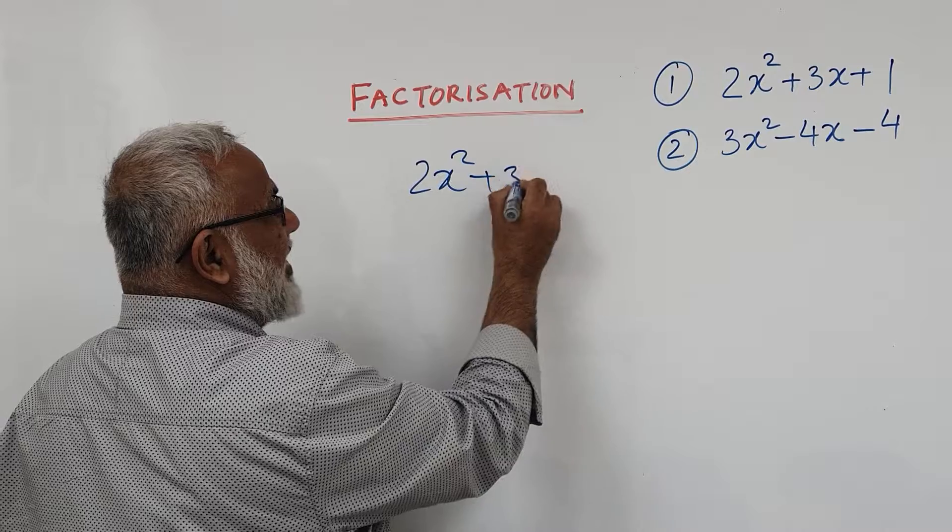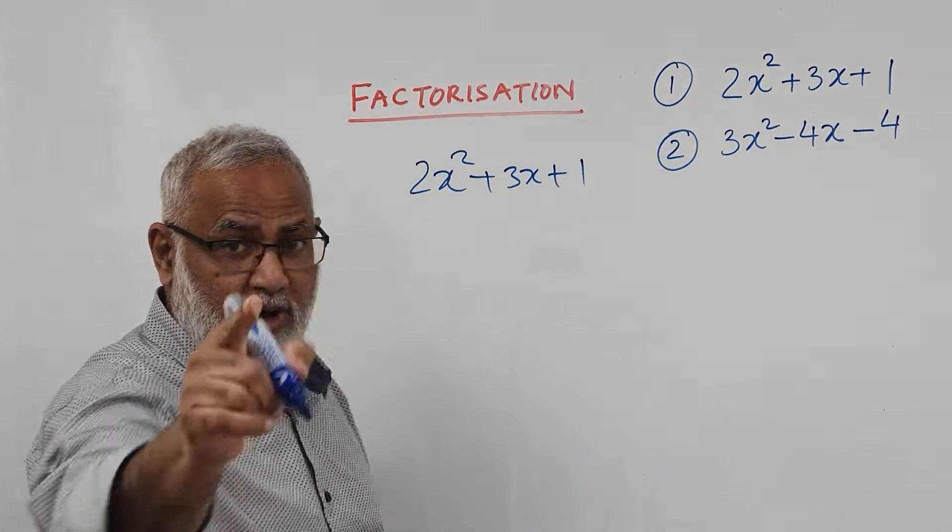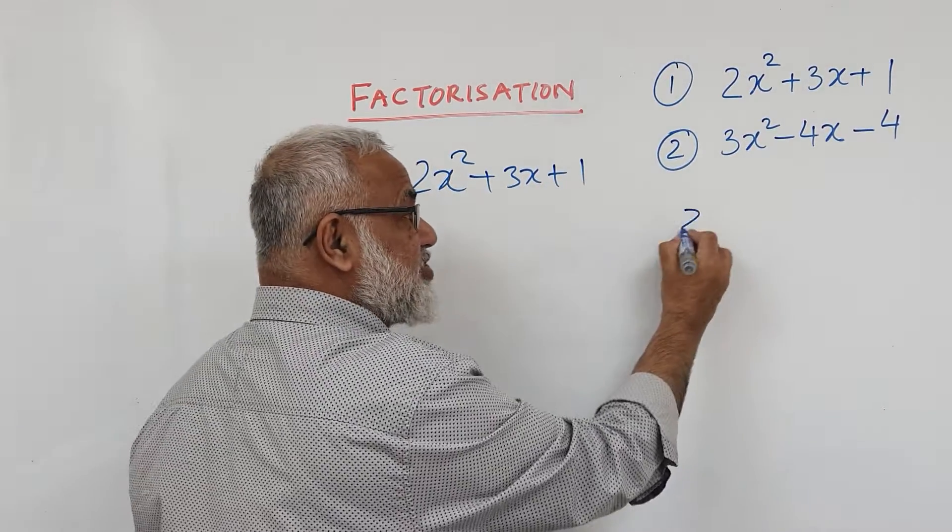2x squared plus 3x plus 1. Step number 1: You times the last number with the first. So the answer is 2.